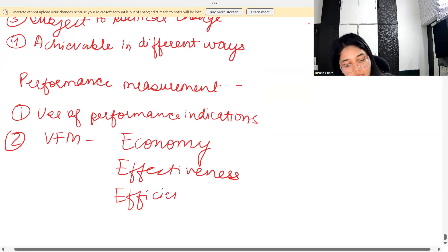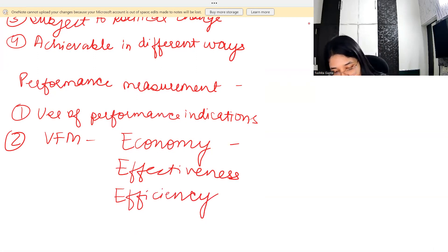How we measure these three: for Economy, we see the cost of the input. If we are able to minimize the cost of input, that means we are economic. Effectiveness is measured using the qualitative or quantitative impact which has been achieved.